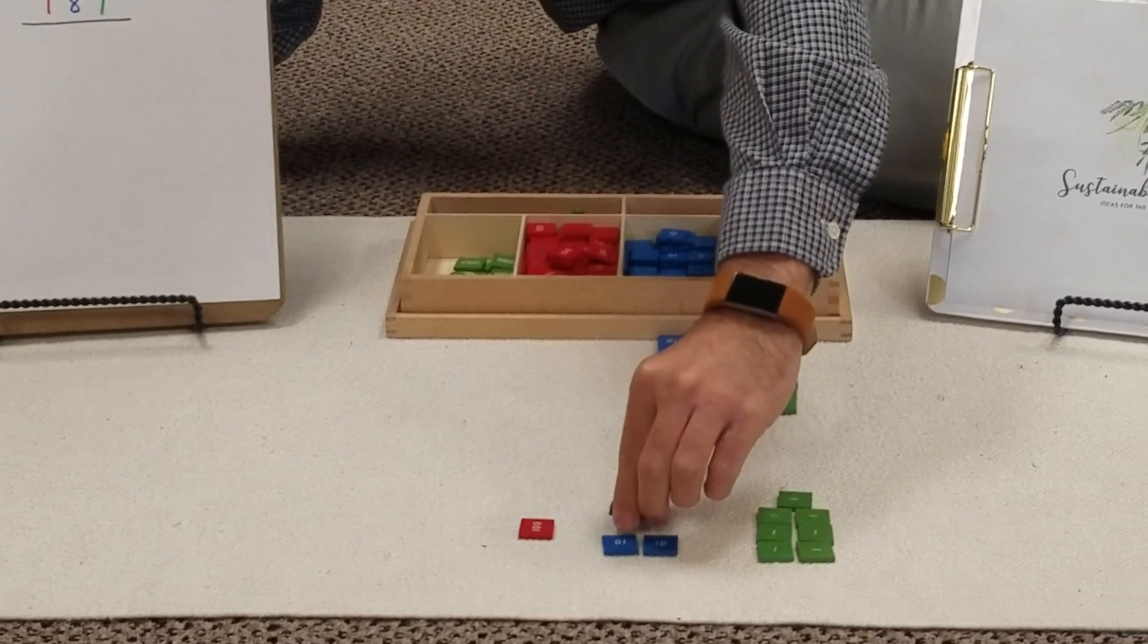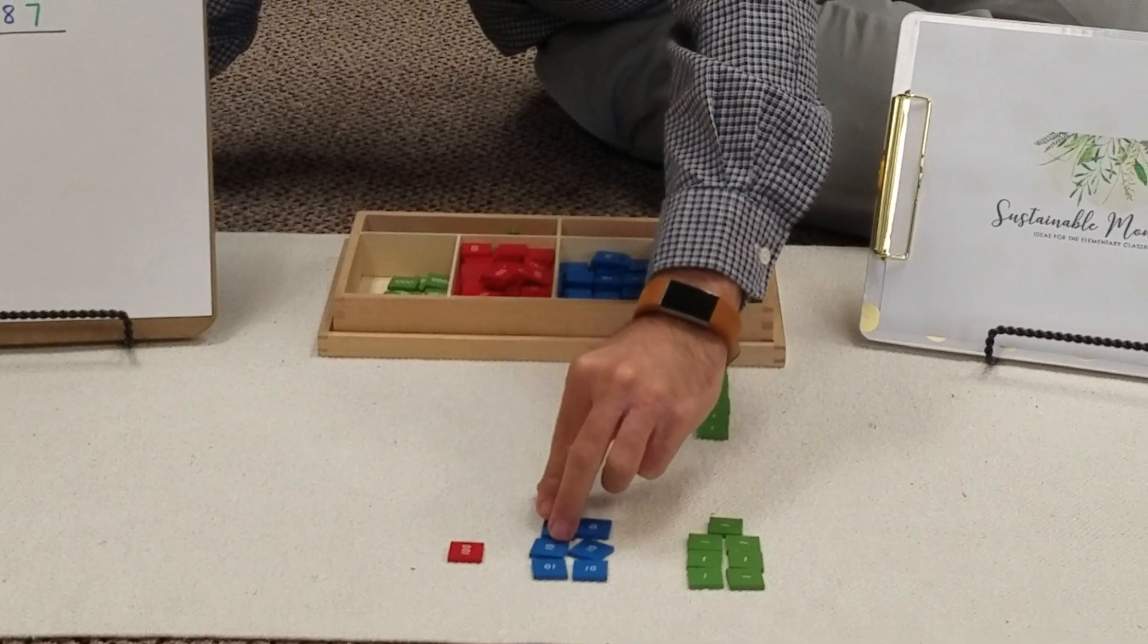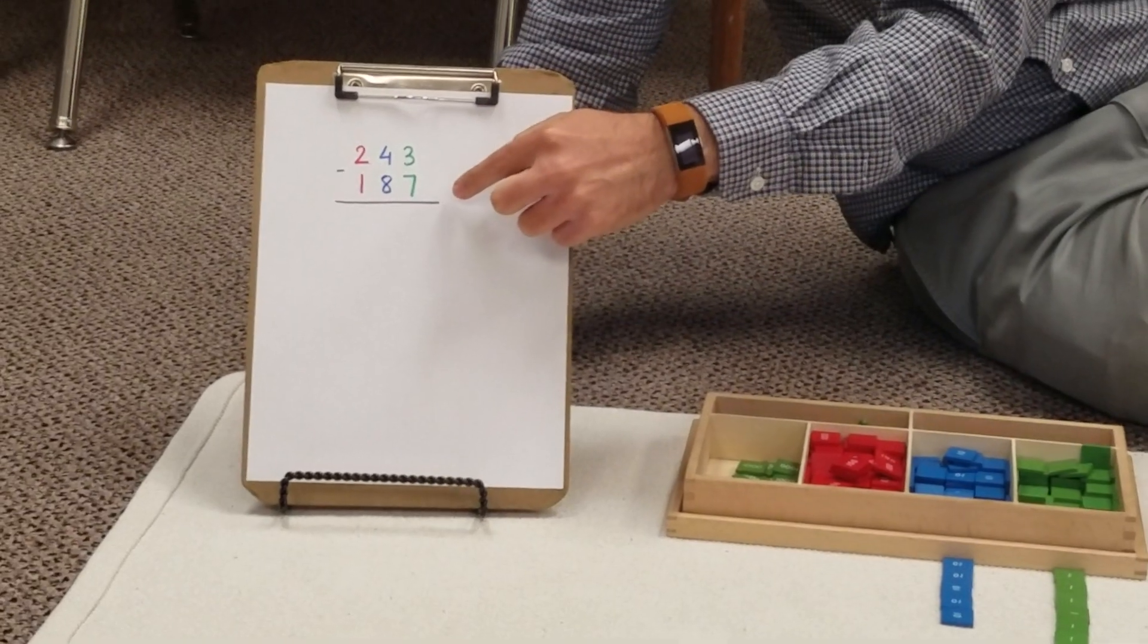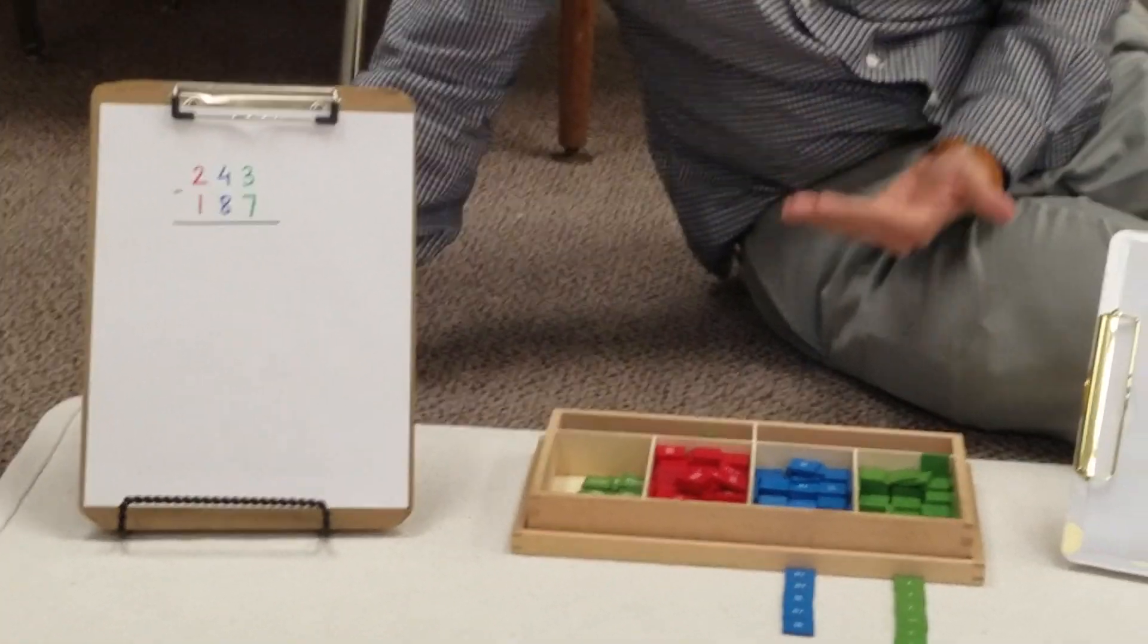We have 1, 2, 3, 4, 5, 6, 7, 8 tens, and 100. So we can check that it's exactly the subtrahend that we have here. So that's the way that the student can check if the problem is actually right.